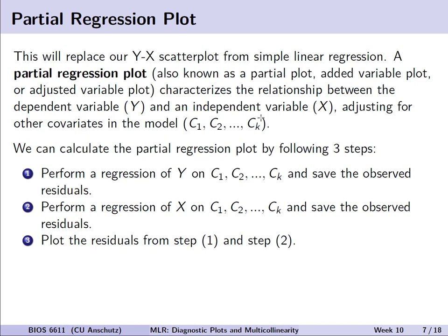We can calculate the partial regression plot by following three steps. First, perform a regression of the outcome on the covariates that don't include our independent variable x, and save the observed residuals — that difference between y-hat and y. In step 2, perform a regression of the independent variable x on those covariates c1 through ck, and save the observed residuals. Then simply plot the residuals from step 1 and step 2, and evaluate the similar properties we looked at for the y-x scatter plot.